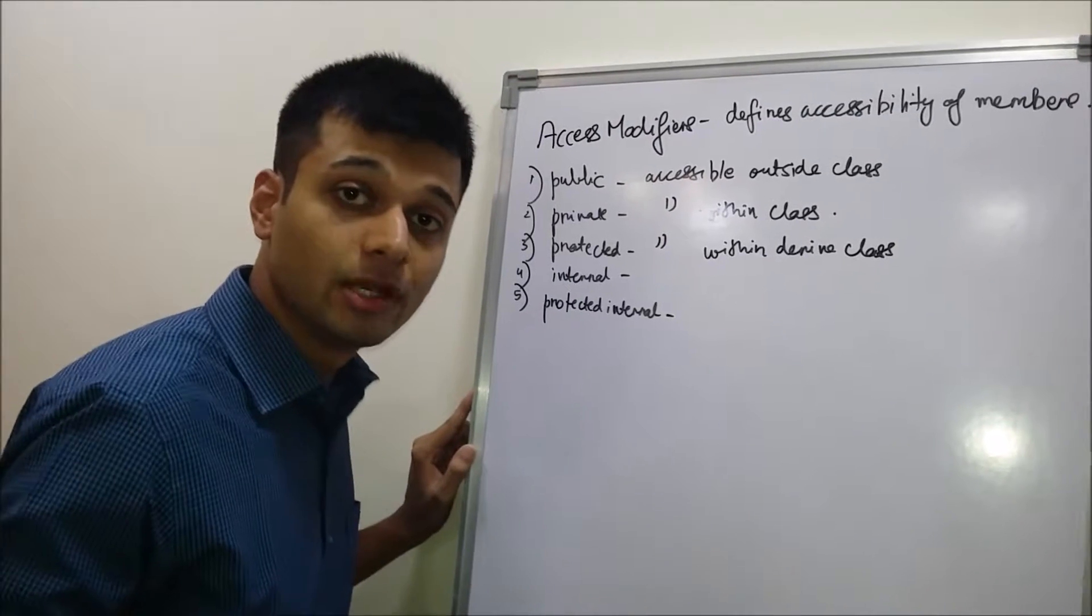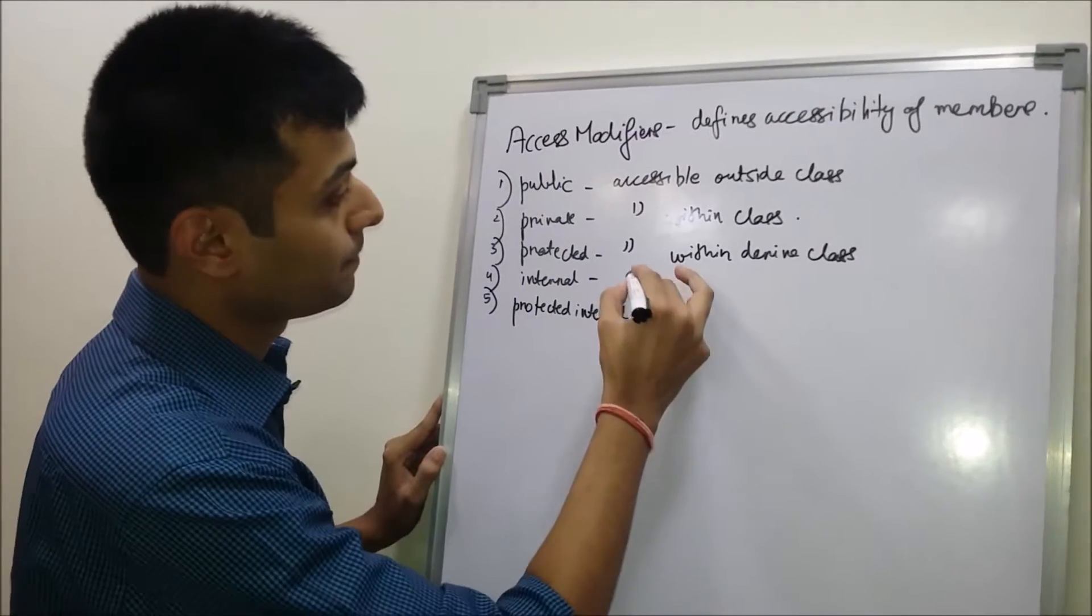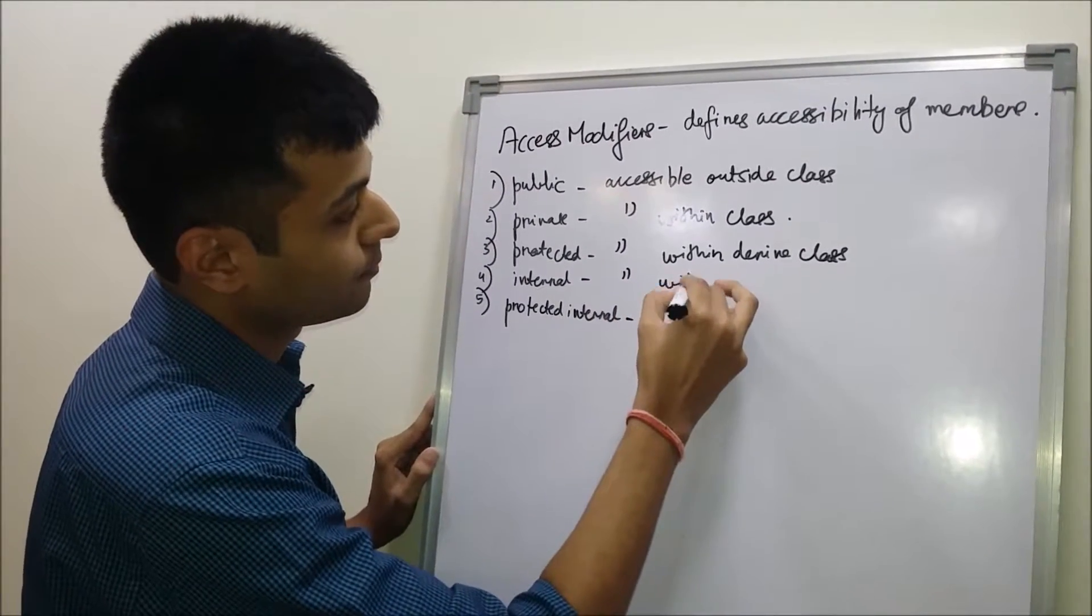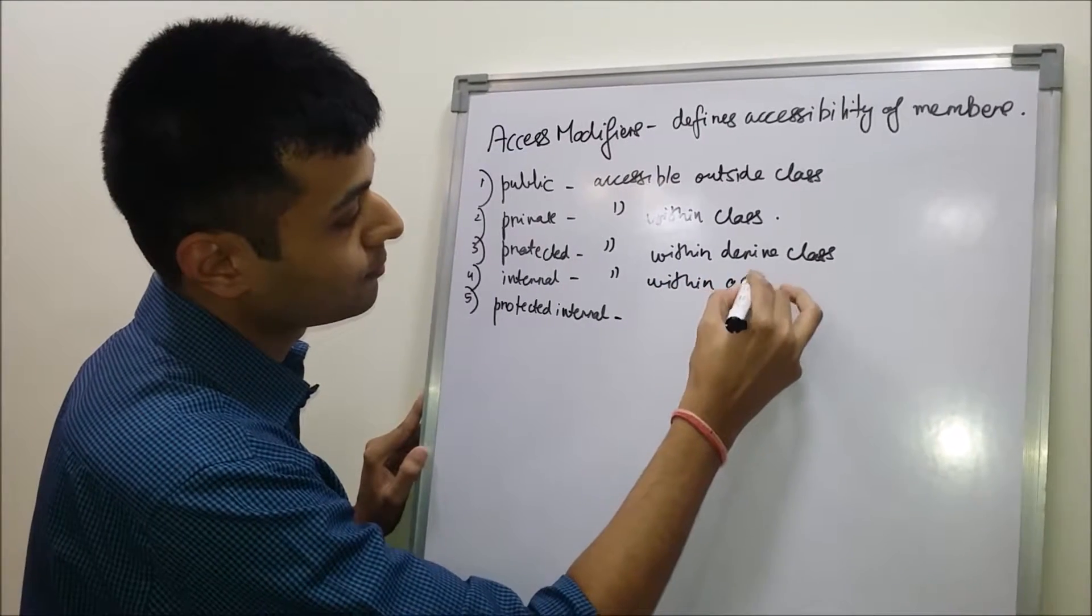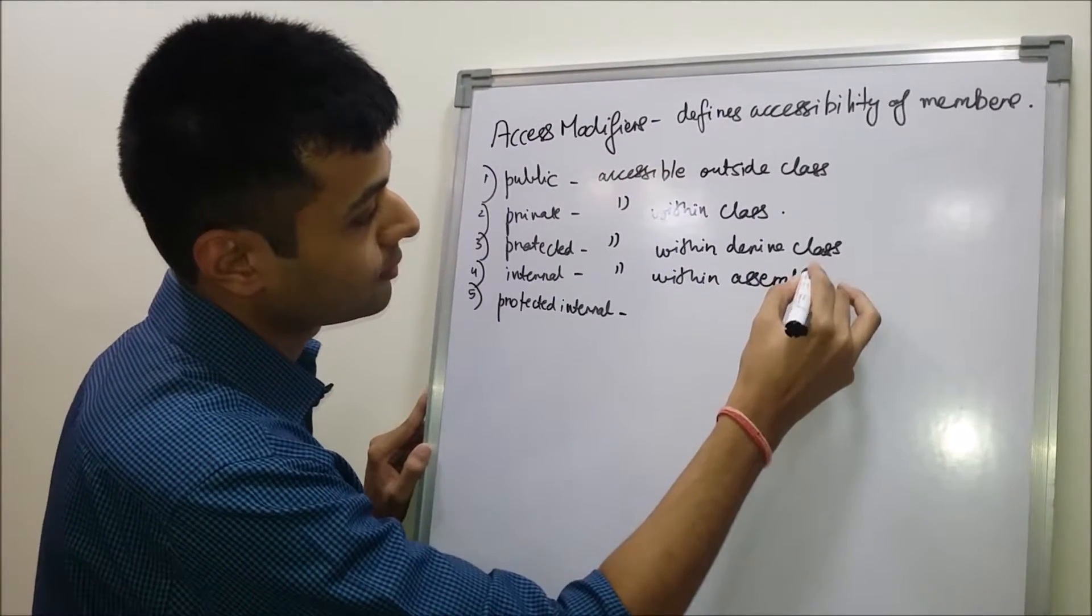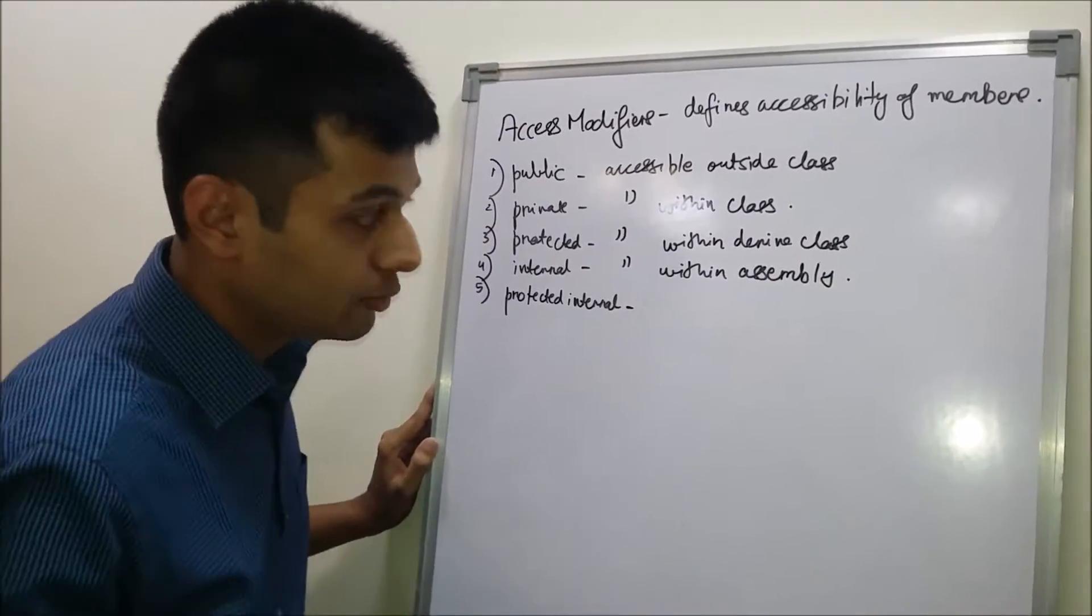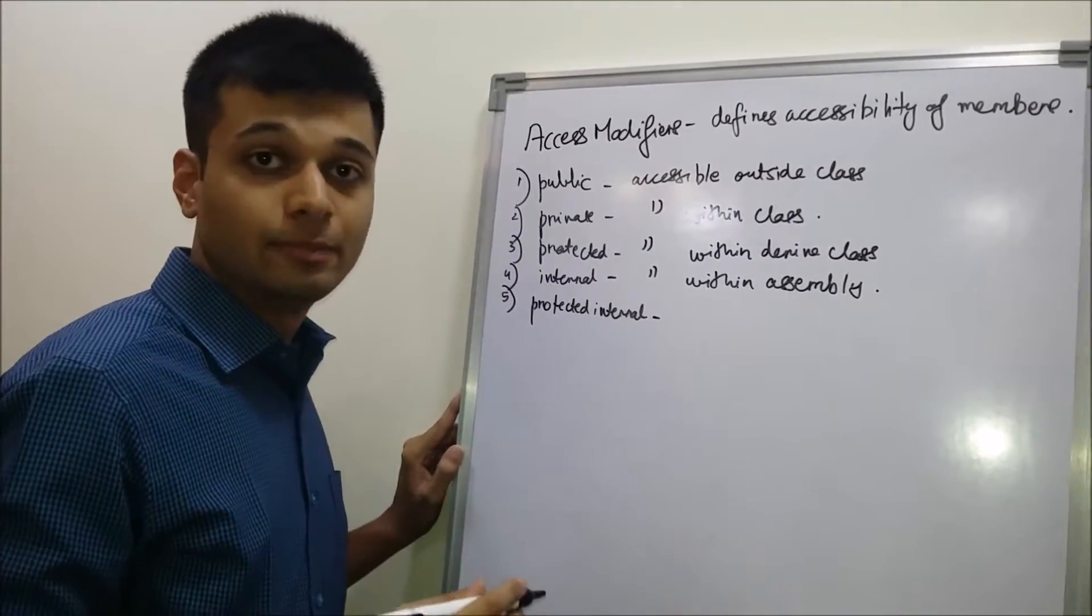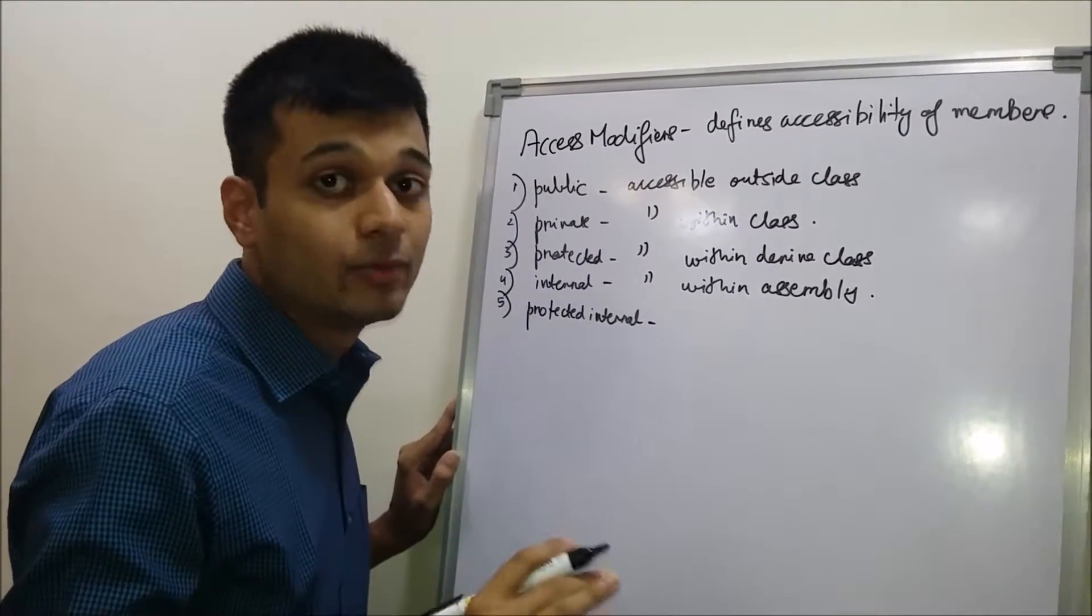Internal means it is accessible within the assembly, and protected internal means it is accessible within the derived class and within the assembly.